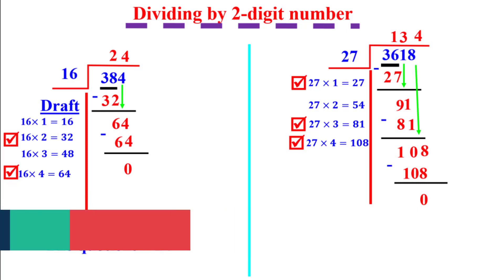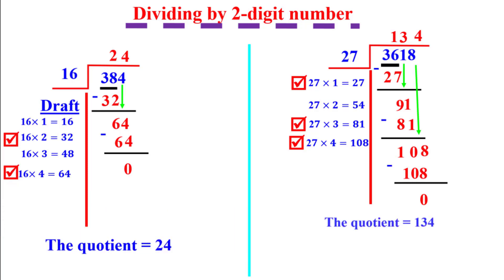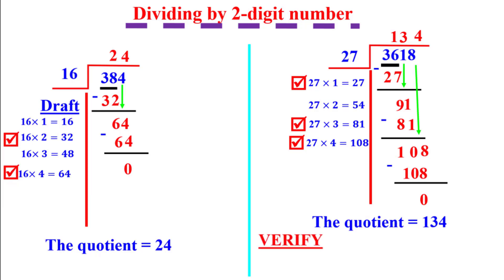The quotient is 134. To check your answer, multiply the quotient, which is 134, by 27. We will get the dividend, which is 3618.